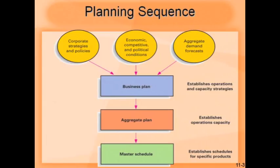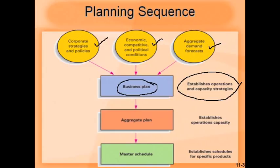At the high level we have a business plan, which is long term. The inputs used are corporate strategies and policies, economic, competitive, and political conditions, and aggregate demand forecast. All that is used for developing business plans. It establishes operations and capacity strategies. The business plan defines the framework within which the aggregate plan is going to work — the scope is defined by the business plan.